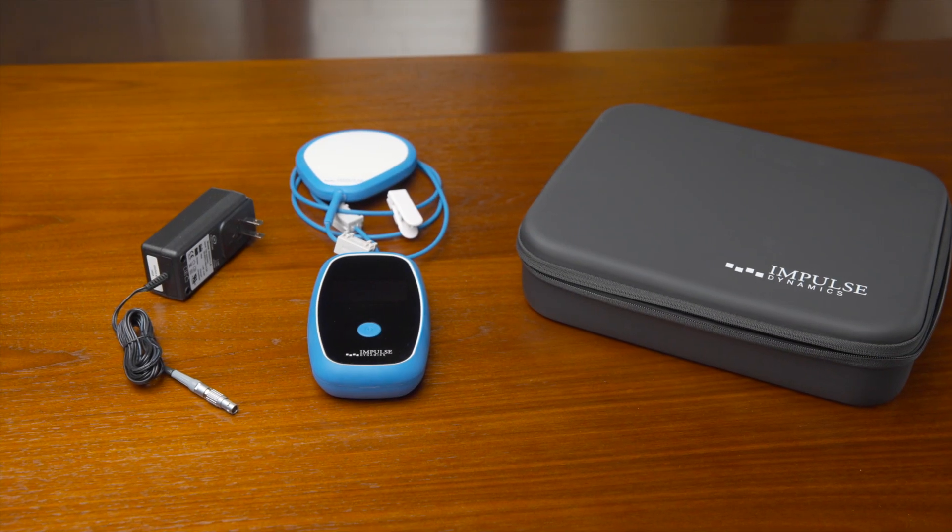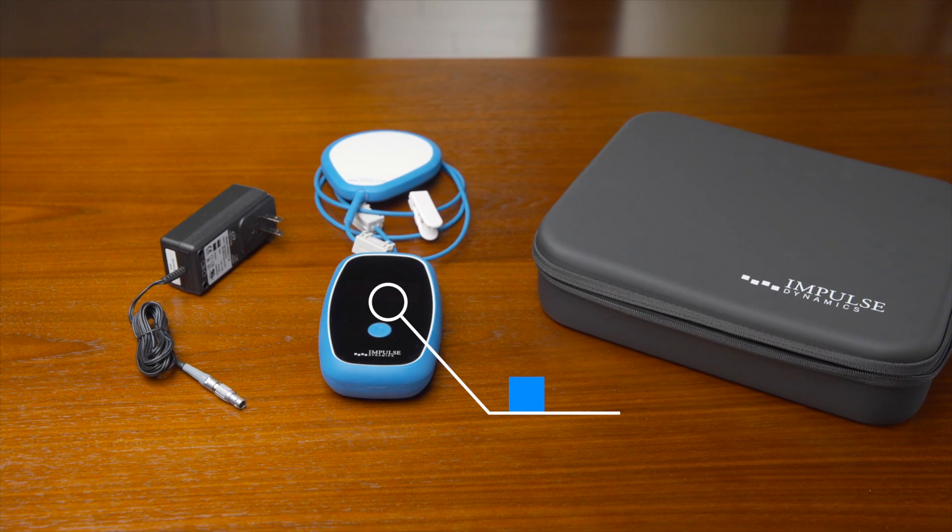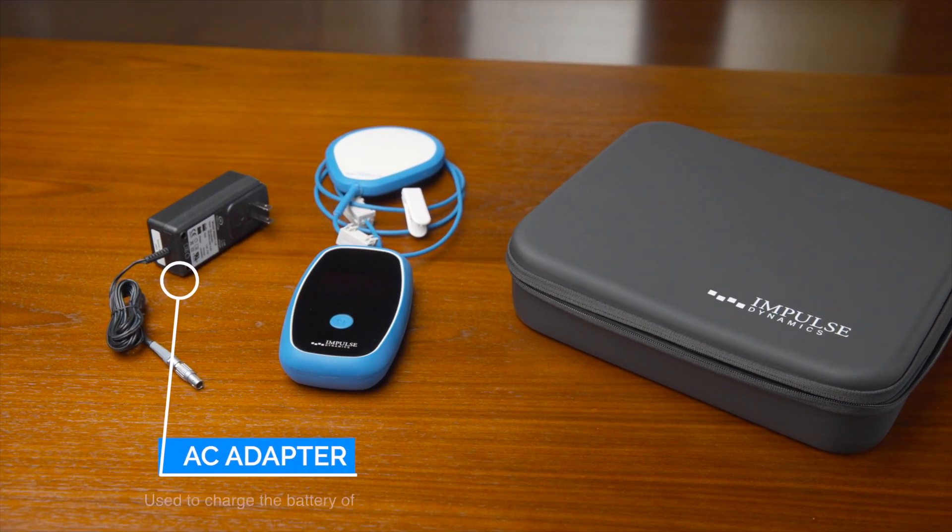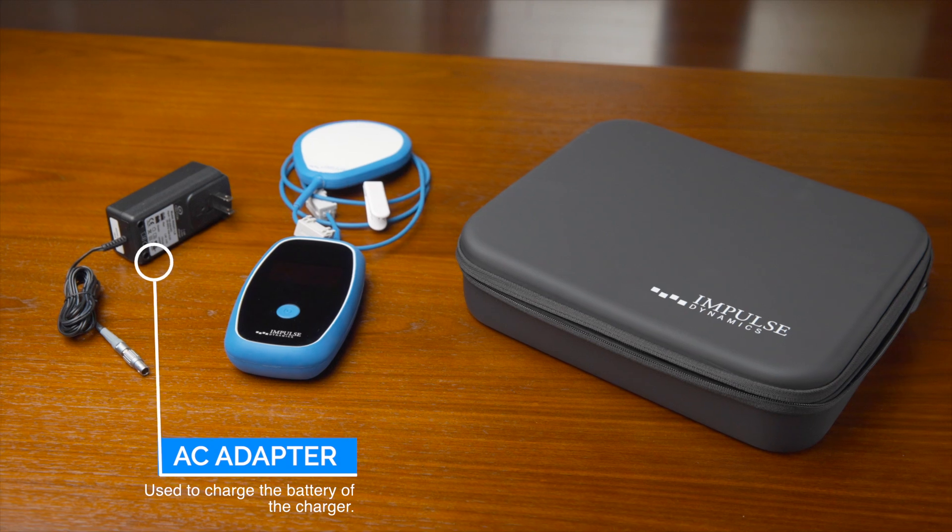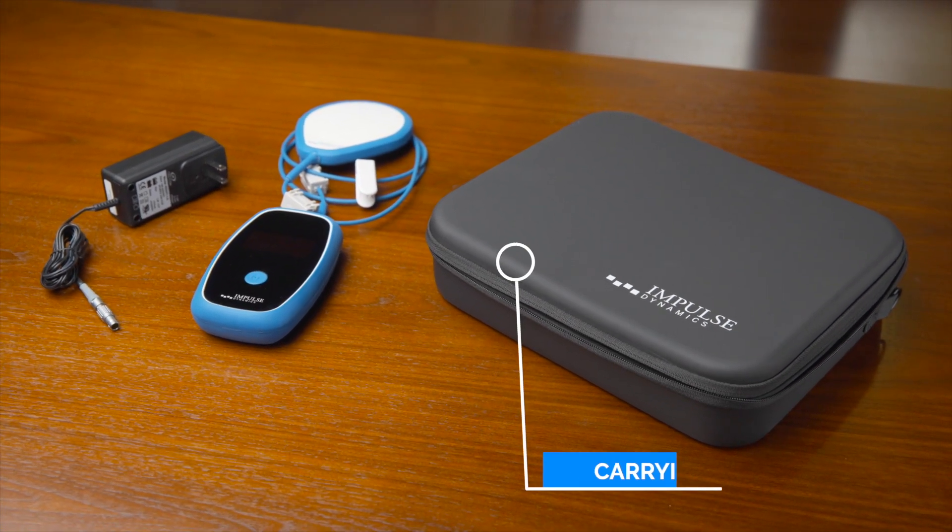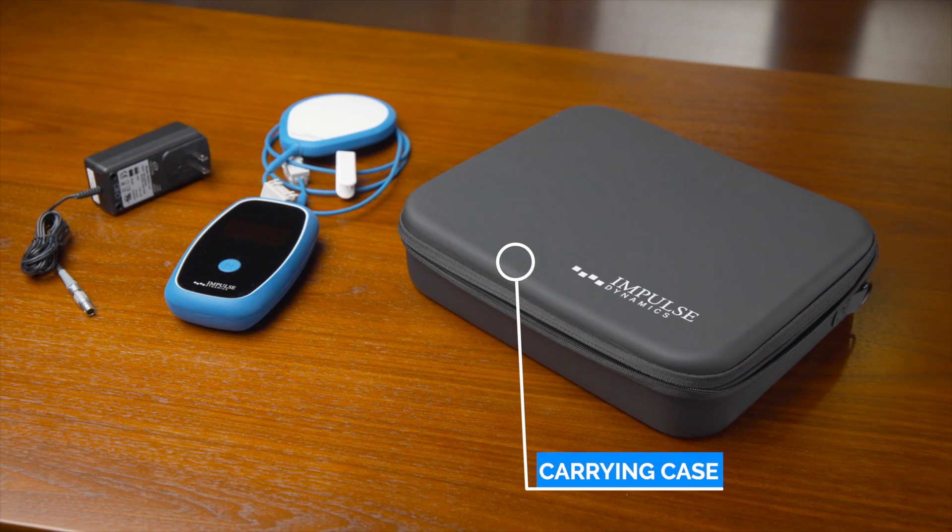The charging system includes the following: charger with attached charging wand, AC adapter (the external power supply is used to charge the internal battery of the charger), and carrying case for the charger and AC adapter.